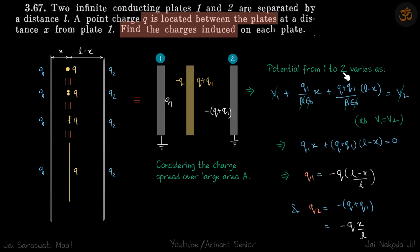So going from 1 to 2, potential varies as V1 plus Q1 by A epsilon times x. So Q1 by A is sigma 1. So field between these two plates is sigma 1 by epsilon. That's what we are writing: Q1 x by A epsilon plus between these two potential difference is Q plus Q1 by A epsilon into L minus x is equal to V2.